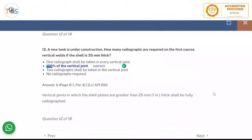A new tank is under construction. How many radiographs required for the vertical welds if it is 35 millimeter thick. So 25 millimeter, it should be 10 percent vertical joints. Here would be the answer.